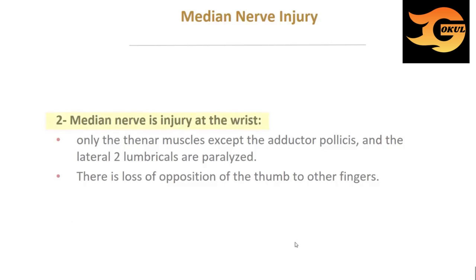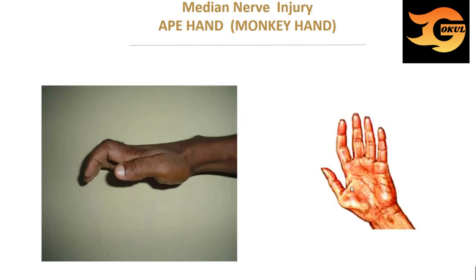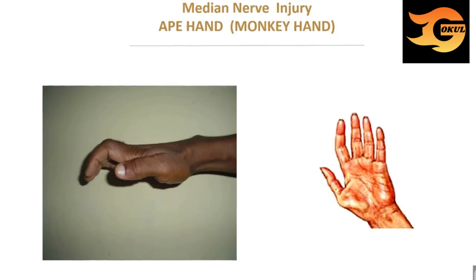When the median nerve is injured at the wrist, only the thenar muscles except adductor pollicis and the lateral two lumbricals are paralyzed. There is loss of opposition of the thumb to the other fingers. This produces the ape hand or monkey's hand deformity.